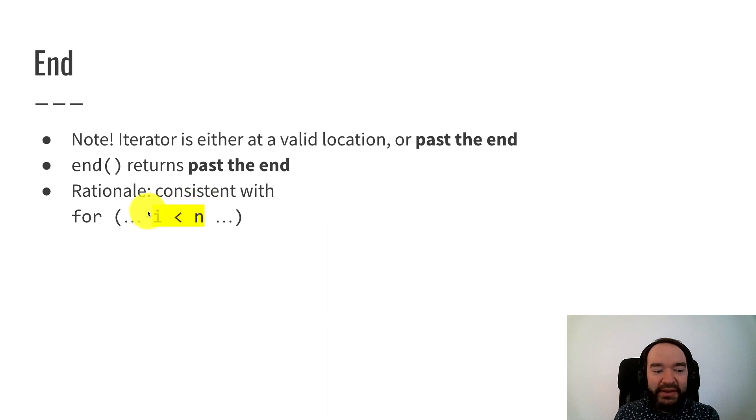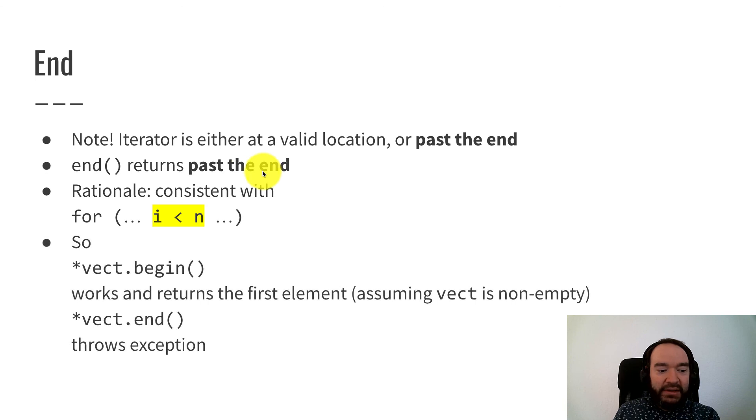The end function returns past the end. So the rationale for this, it is a little weird, but we want to be consistent with this i less than n pattern that we see in these C-based for loops, that we're comparing an index or iterator to an invalid location. n is not a valid index, and the end is not a valid iterator. So keep in mind then that if I get the beginning iterator and dereference it, that'll work because the beginning is a valid location of the first element. Dereferencing that iterator gives me the first value in the collection. That is assuming that the data structure is not empty. If it's empty, that would be a problem.